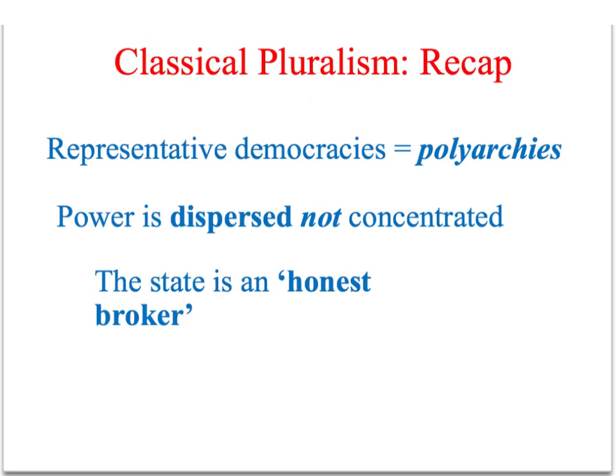To recap: classical pluralists argue that representative democracies like Britain and America are polyarchies — a political system where power is spread out and dispersed rather than concentrated in the hands of a small group. They also argue that the state is neutral in disputes among groups, that it has no inherent interest of its own, and therefore can arbitrate among the competing interest groups. From their perspective, the state is like an umpire or judge.